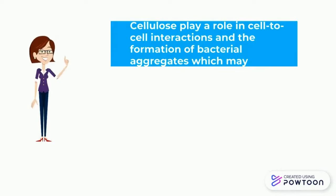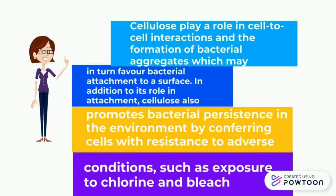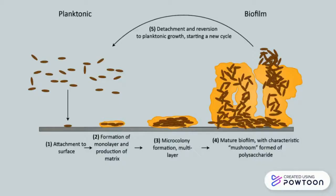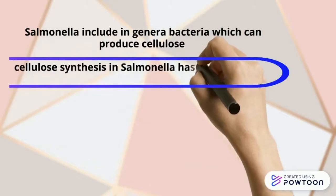Cellulose plays a role in cell-to-cell interaction and the formation of bacterial aggregates, which may in turn favor bacterial attachment to surfaces. Cellulose also promotes bacterial persistence in the environment by conferring resistance to adverse conditions such as exposure to chlorine and bleach. Salmonella is among the general bacteria which can produce cellulose, and cellulose synthesis in Salmonella has been shown to be a primary cause of biofilm formation.